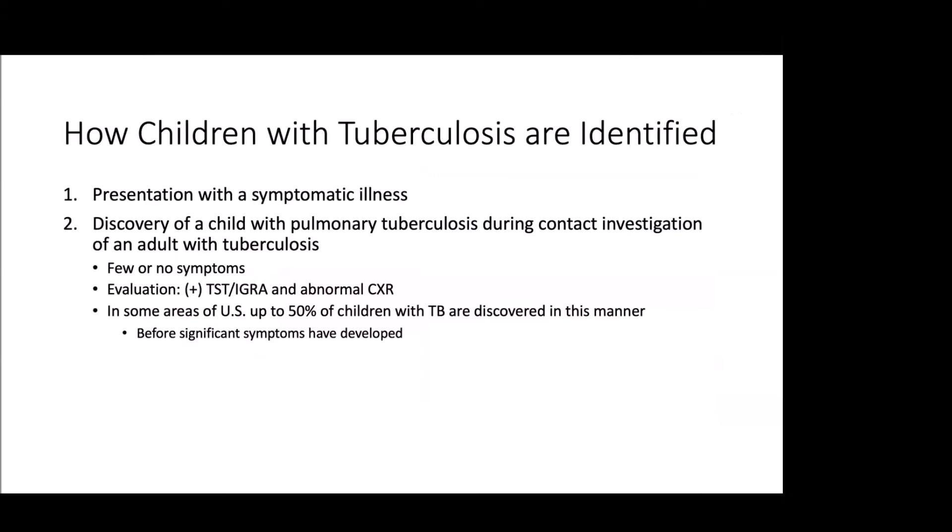How are children identified? There are two ways. One, they can present with a symptomatic illness — if they have classic risk factors, TB may be considered; if they don't, it often isn't, hence the delay in diagnosis. The second is during contact tracing: when we identify household contacts of an adult or adolescent with tuberculosis, we find children in the household who may be ill. These children may have few or no symptoms, often have a positive TST and IGRA but sometimes not initially, and we'll often have an abnormal chest X-ray. In some areas, almost 50% of children with TB are discovered this way, before very significant symptoms have developed.